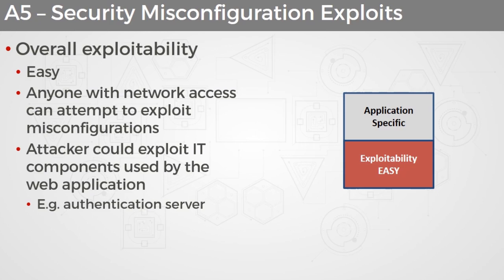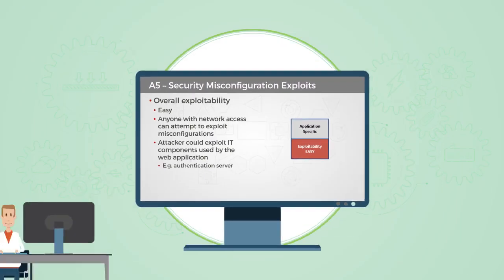Because it's such a wide umbrella, security misconfigurations come in many forms. Generally speaking, the overall exploitability is considered to be easy, because anybody that has network access to a network where that web app is running could potentially attempt to exploit any misconfigurations they find. The attacker could even exploit IT components used by the web application stack, such as compromising an authentication server. In this video, we discussed security misconfiguration exploits.